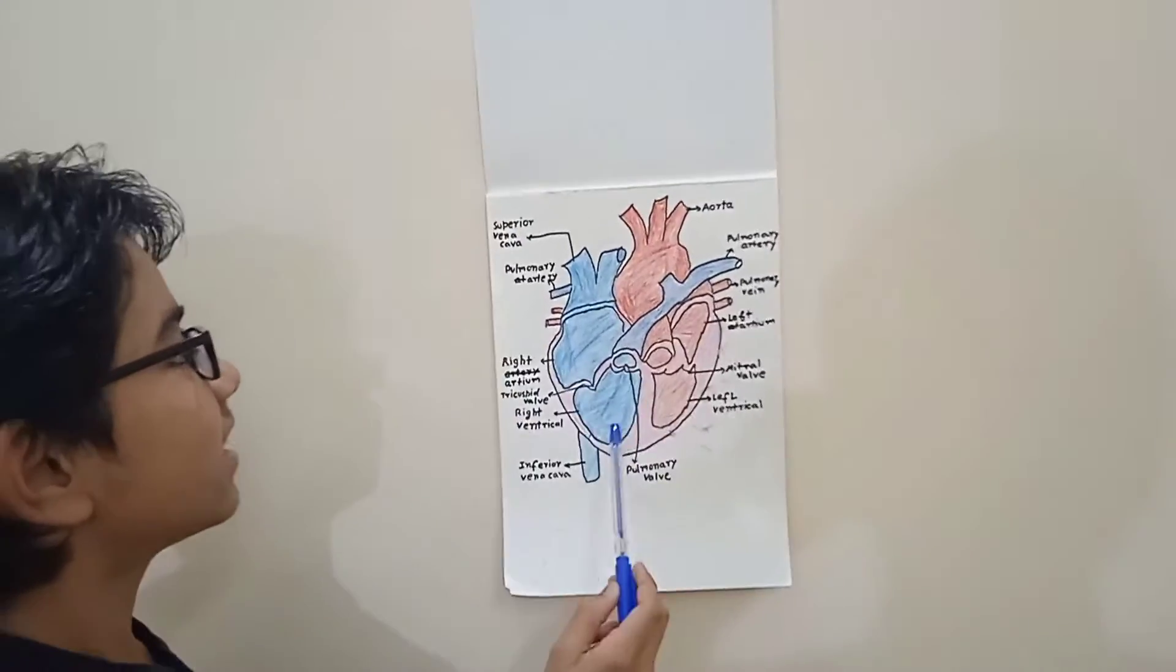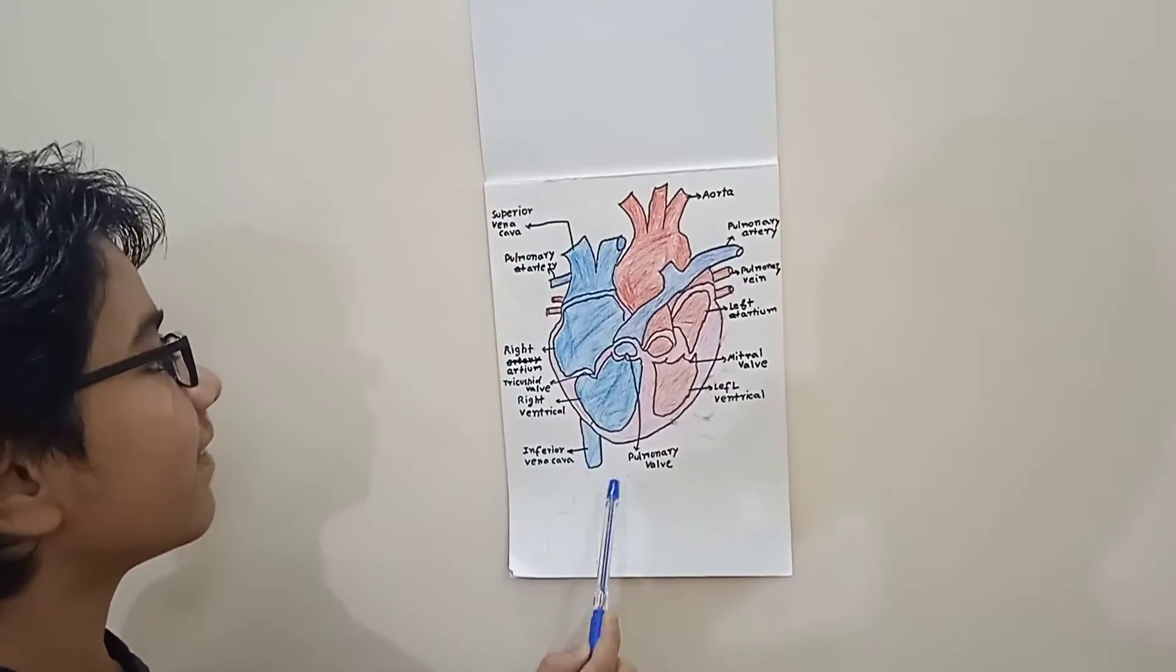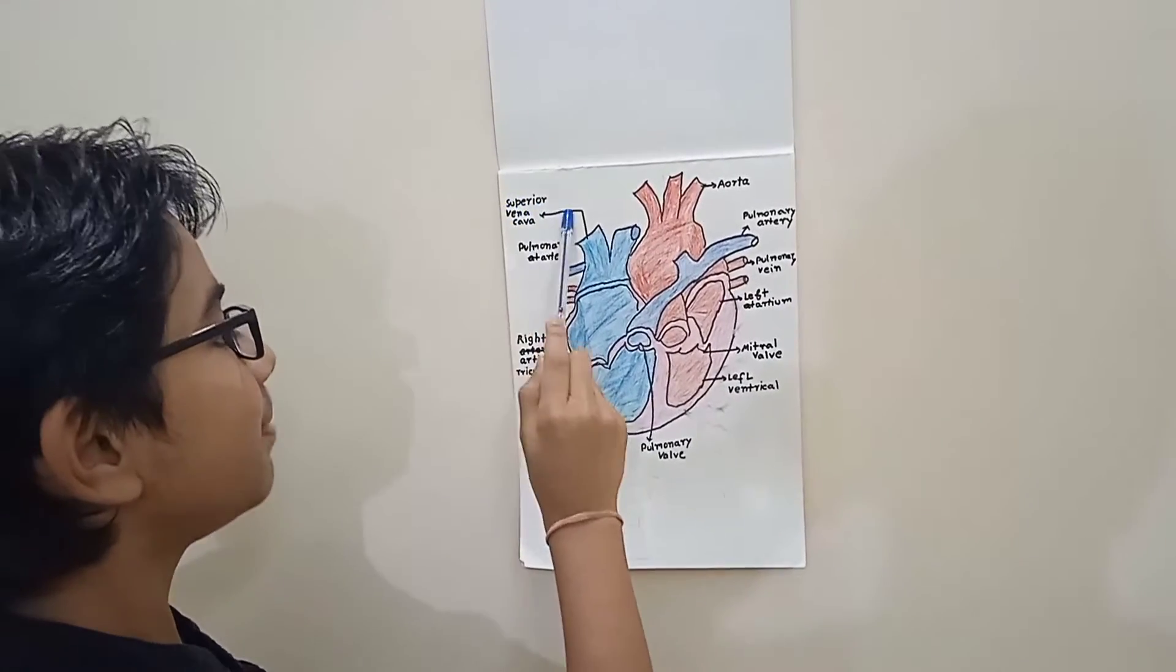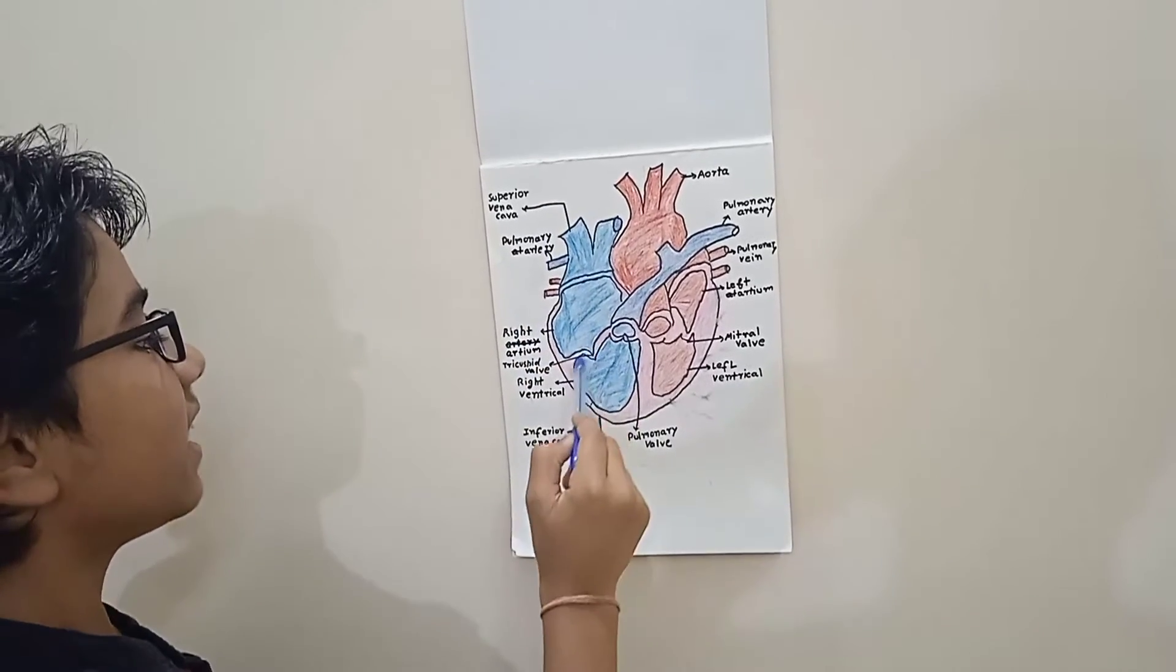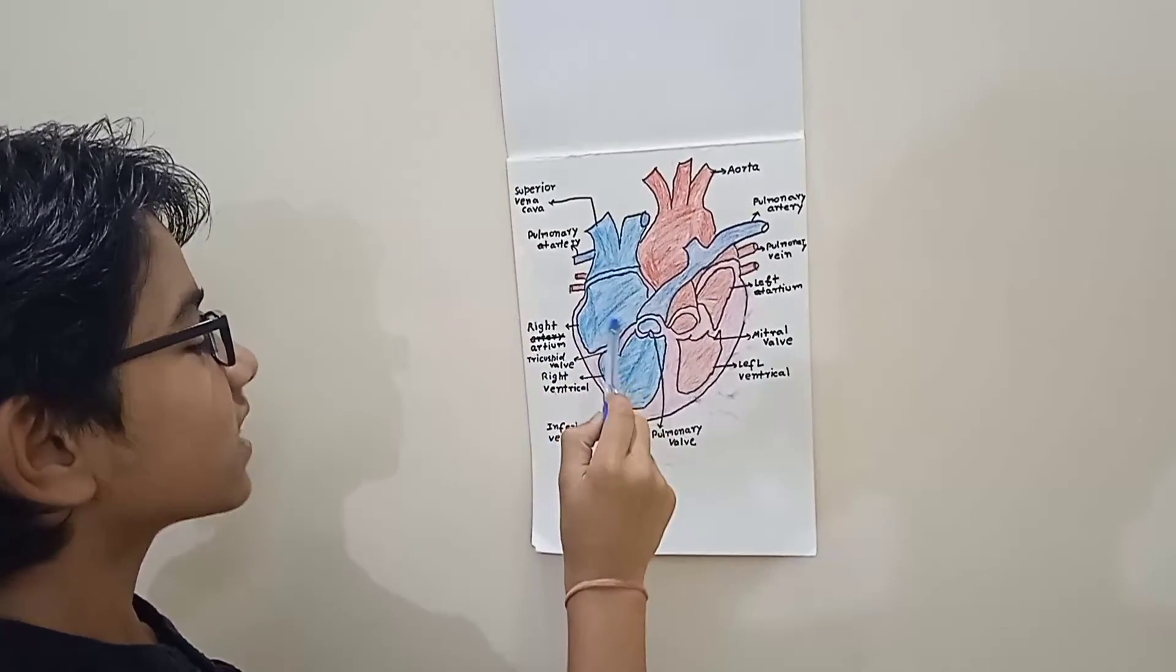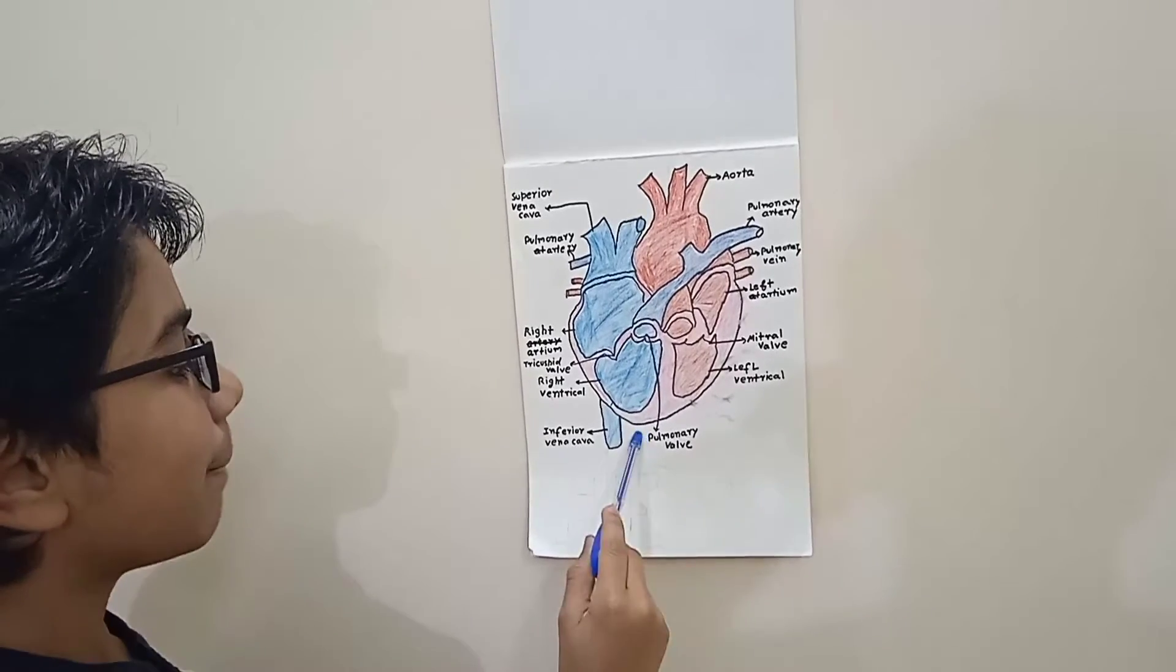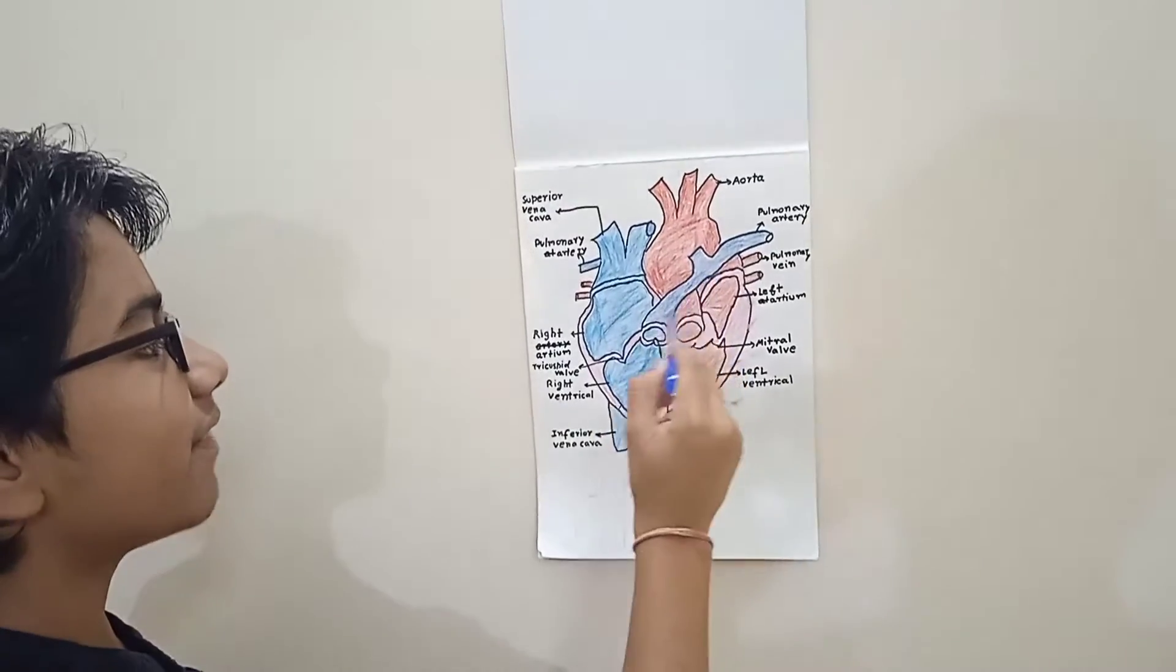Okay, so from this superior vena cava and inferior vena cava, when the deoxygenated blood will enter our body, then from these two tubes it will go to the right atrium, then by tricuspid valve, then by pulmonary valve, through pulmonary valve it will go to left direction.